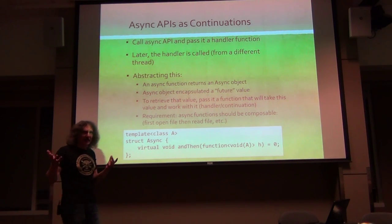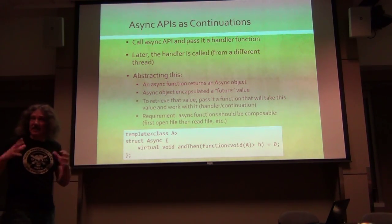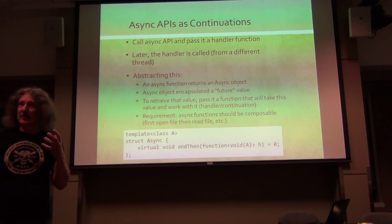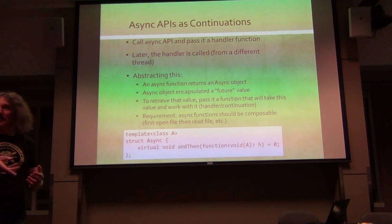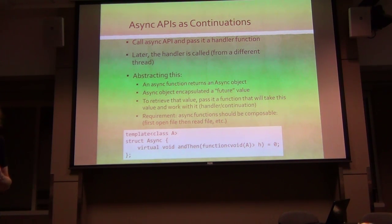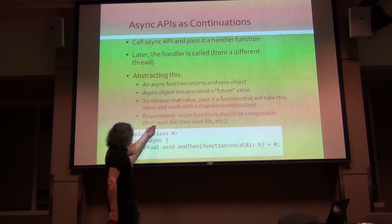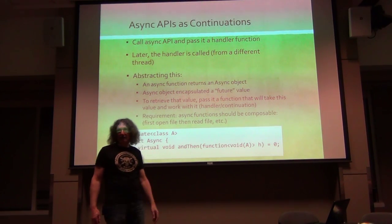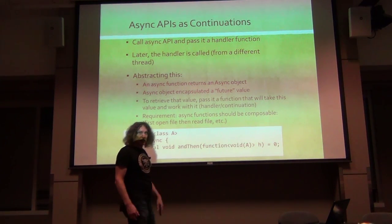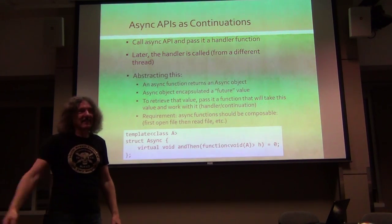We would like to have this system so that we could actually compose these async objects - do stuff with them - like an OR combinator, AND combinator. What if I want to apply a function to what's inside the box? We want them to be composable, like: first open file - that's an asynchronous call - and then I want to read this file. But I have to read the file inside the handler.